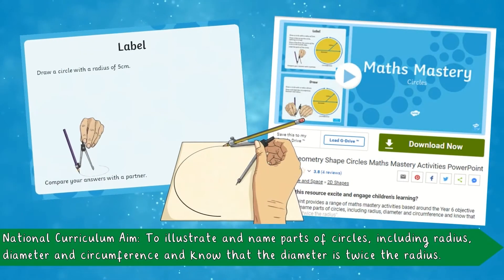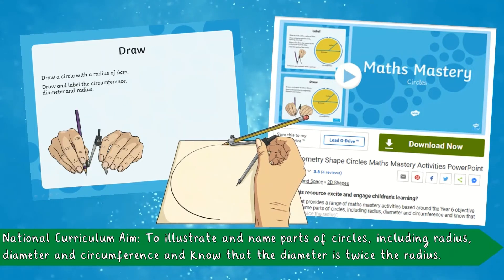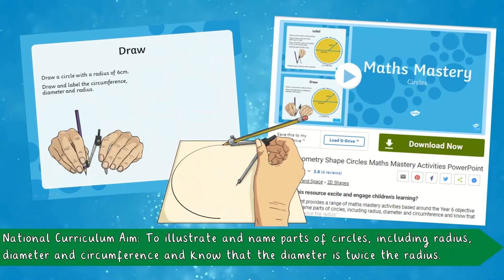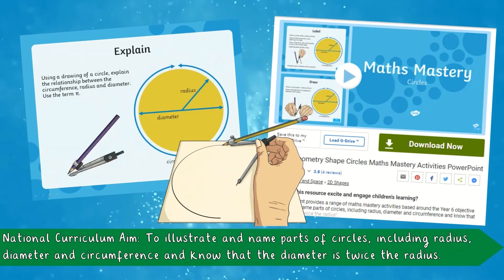This PowerPoint provides a range of maths mastery activities based around the year 6 objective: illustrate and name parts of a circle, including radius, diameter and circumference, and know that the diameter is twice the radius.